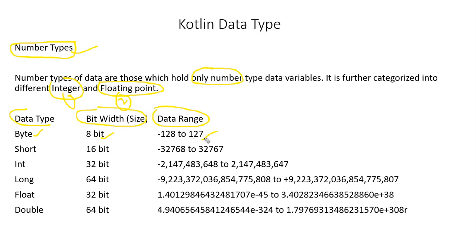Next is short, which is 16 bits — double the size of byte — with a range of roughly minus 32,768 to positive 32,767. Then we have the integer data type, which is 32 bits — double the size of short — and you can see the range is quite huge, somewhere around 2 billion.